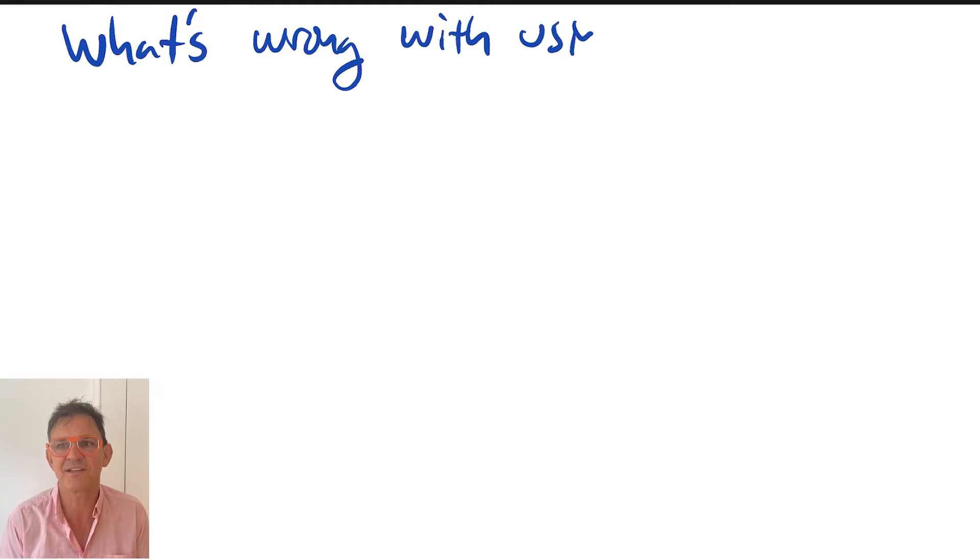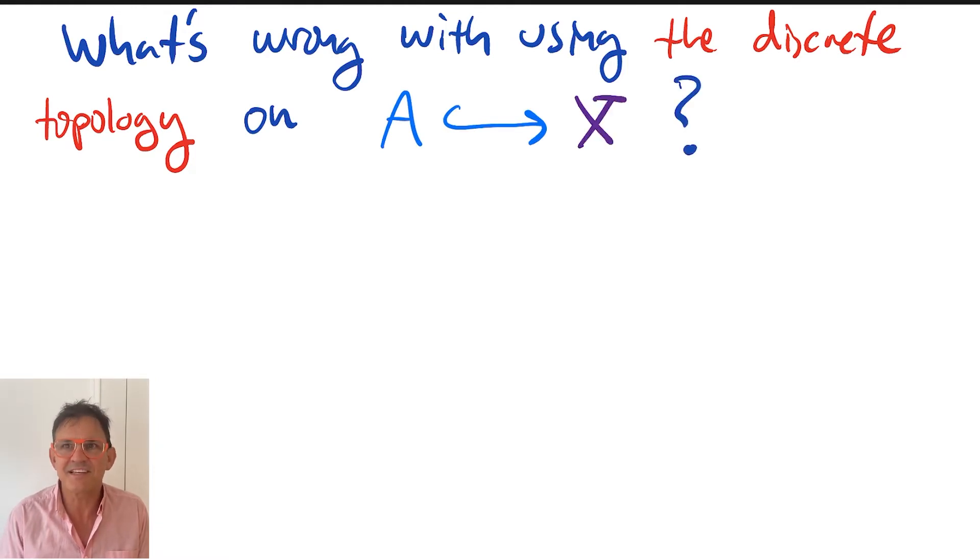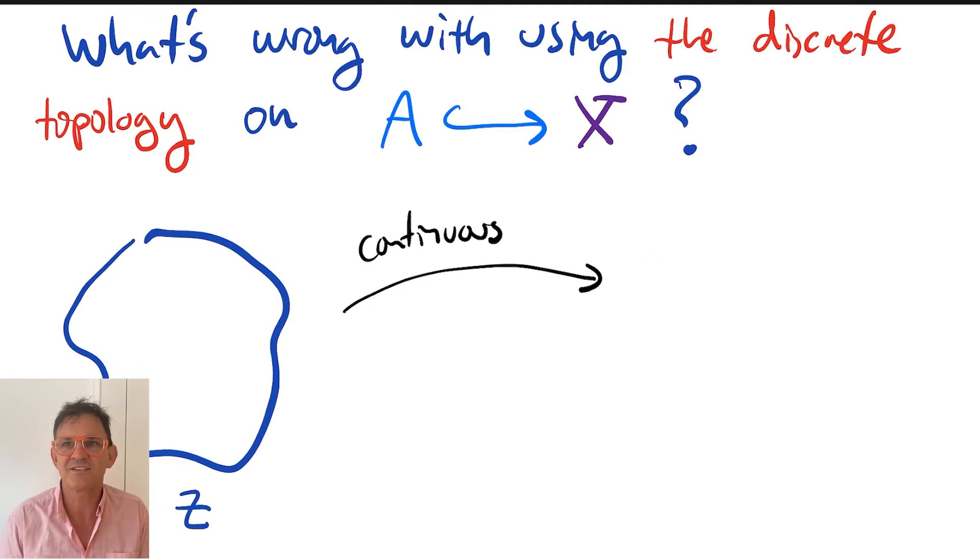However, putting the discrete topology on a subspace A is usually not a good choice. The reason is that there will exist continuous functions from a topological space Z to the space X, whose image lies entirely in A,